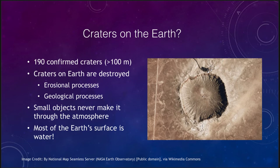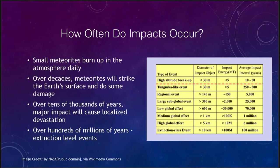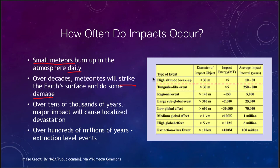Let's look at how often some of these impacts occur. Small meteors burn up in the atmosphere every day, and we see meteor showers when there are larger numbers of them. Over decades, meteorites will strike the Earth's surface and do some damage. High-altitude breakups of material can occur on the timescale of just a few decades — those break up high in the atmosphere and explode causing significant damage. Over tens of thousands of years you will get major impacts that cause localized devastation, things in the 300 to 600 meter size range.